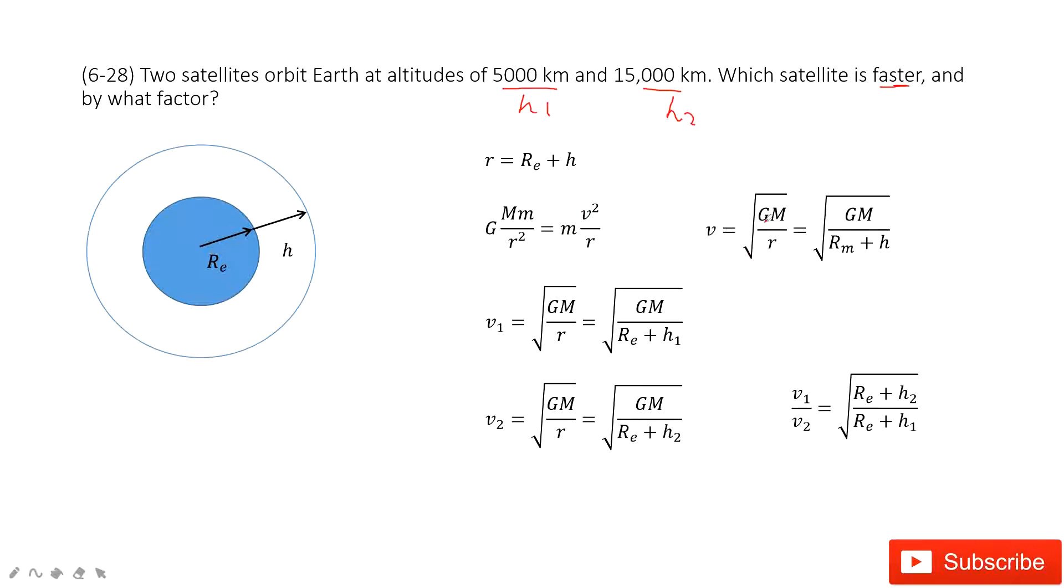It's very easy: v squared equals GM divided by r. And this r just equals Re plus h.